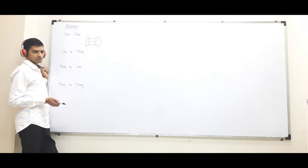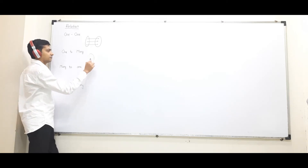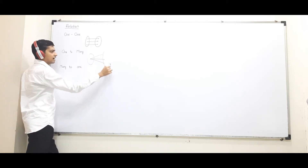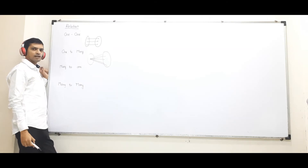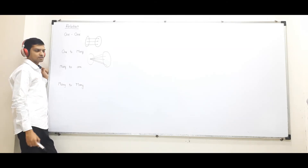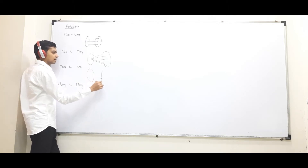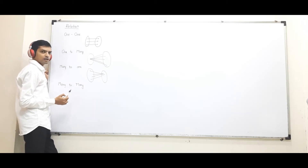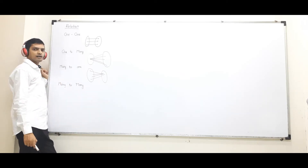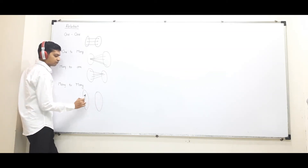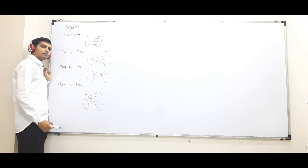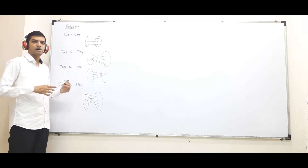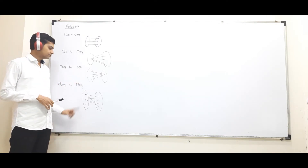One-to-many means like I am teaching many students — that is called a one-to-many relation. Many-to-one means many of you are learning from me, so that is a many-to-one relation. And many-to-many: many people have opted for mathematics, many for physics, many for chemistry — many children have opted for many courses, so that is many-to-many.